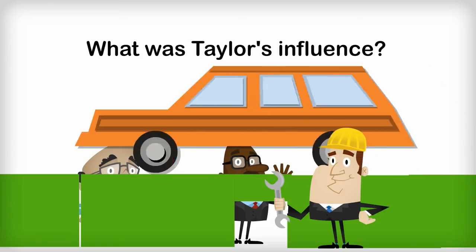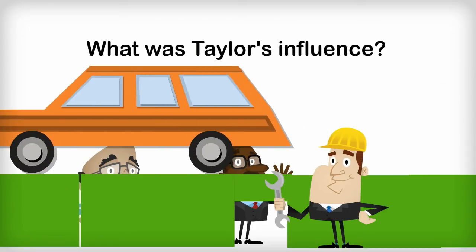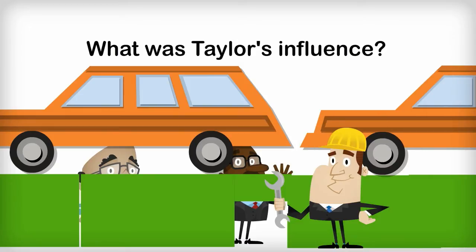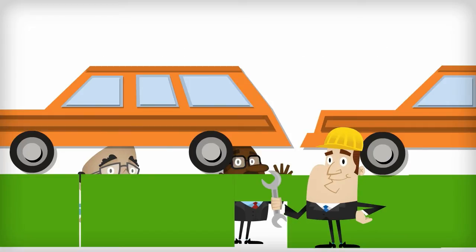The ideas of Taylor about scientific management influenced some of the great entrepreneurs of the early 20th century, including carmaker Henry Ford, who was one of the first manufacturers to develop an assembly line. In an assembly line, the production process is broken down into its constituent tasks. Different workers are each given one task to perform.